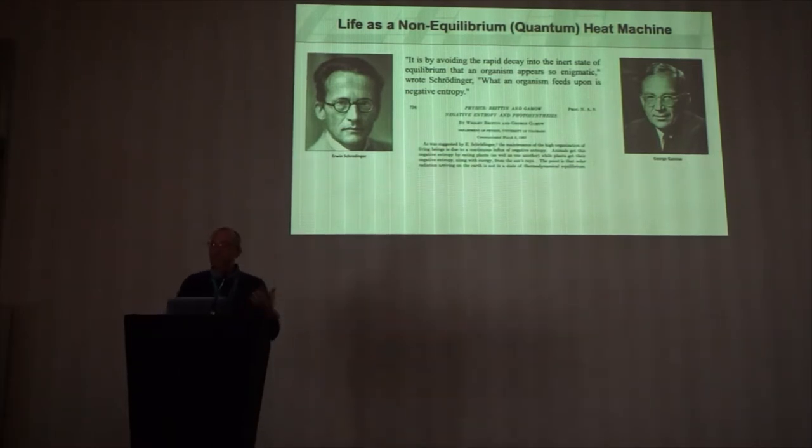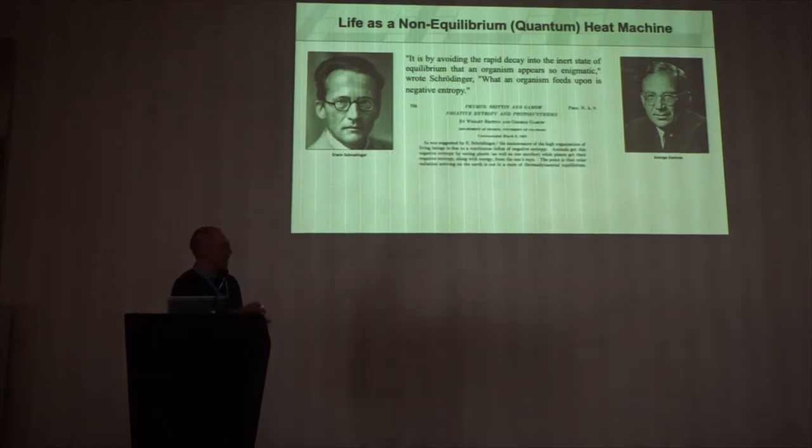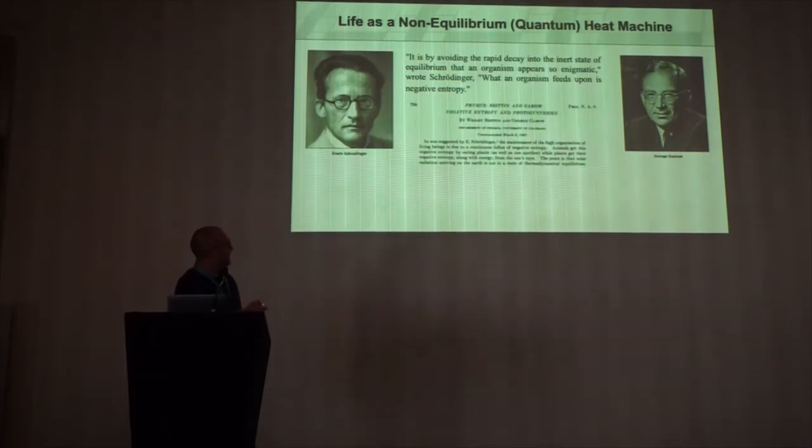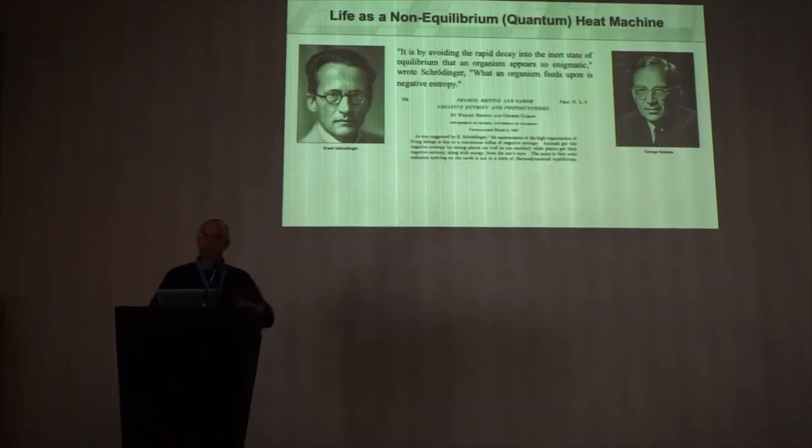And so they were kind of cooking up an early design principle of life that, you know, the point is that the solar radiation arriving at Earth is out of equilibrium. And so that gives us a means to basically generate life.